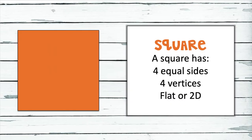Let's try it again. Describe this shape too. Pause the video to think about all of its attributes. You probably named this as a flat or 2D square. You counted the sides, which are four, and the vertices, which are four. A square's sides are always equal.